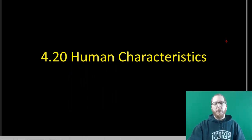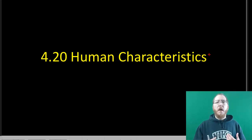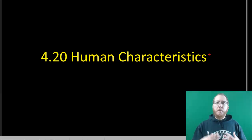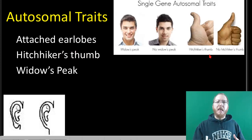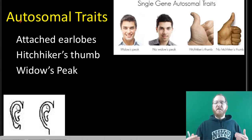Welcome to section 4.20 where we're going to discuss human characteristics, specifically Mendelian human characteristics, meaning they are controlled by one gene that completely determines your phenotype based on whether you have the dominant allele or both recessive alleles. For our autosomal traits, these are on chromosomes that do not determine sex, so it won't matter if you're male or female — everybody has an equal chance at getting these.